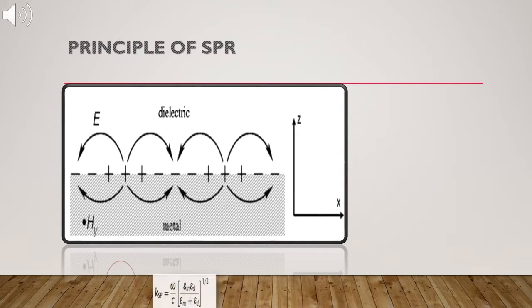The dispersion relation of surface plasmons is given. Here, since εm is a complex entity, Ksp is also a complex entity.